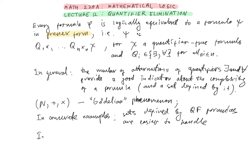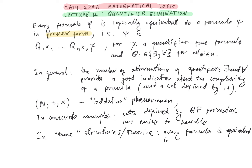So in certain structures or theories, every formula is logically equivalent to a quantifier-free one. We will see some examples of this, but before that we will study some of the properties and some of the criteria for when this happens in general and in some concrete examples.